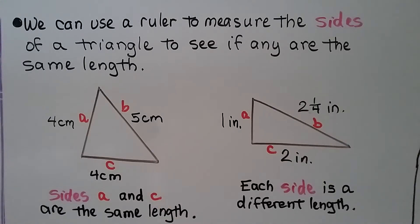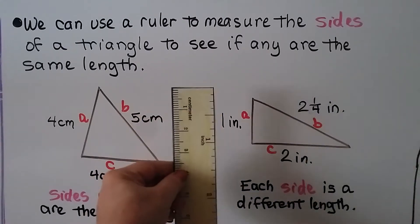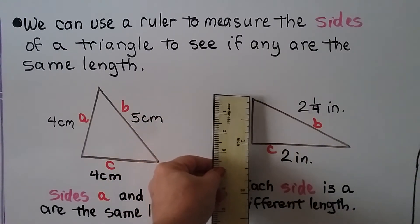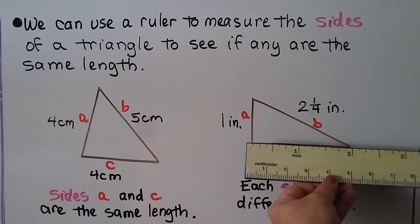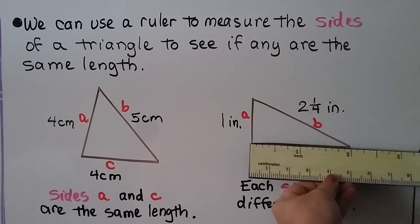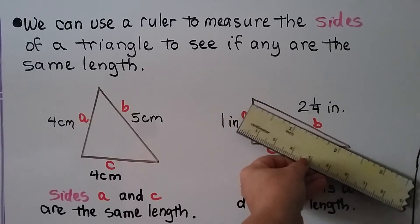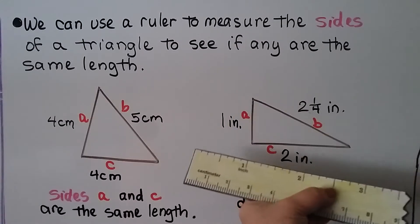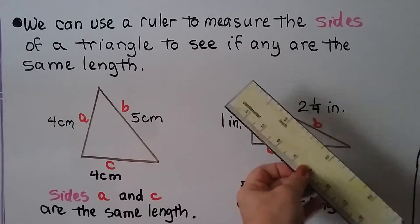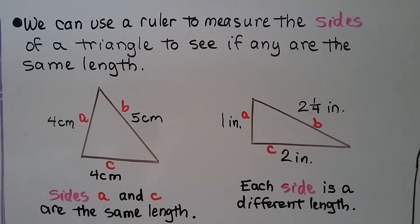Using the inches side of the ruler, we can measure the sides: one side is one inch, another is two inches, and the third side is two and one fourth inches. It went past the two inch mark but it's not quite at two and a half, so it's two and one fourth inches. Each side is a different length, and the ruler helped us find that.